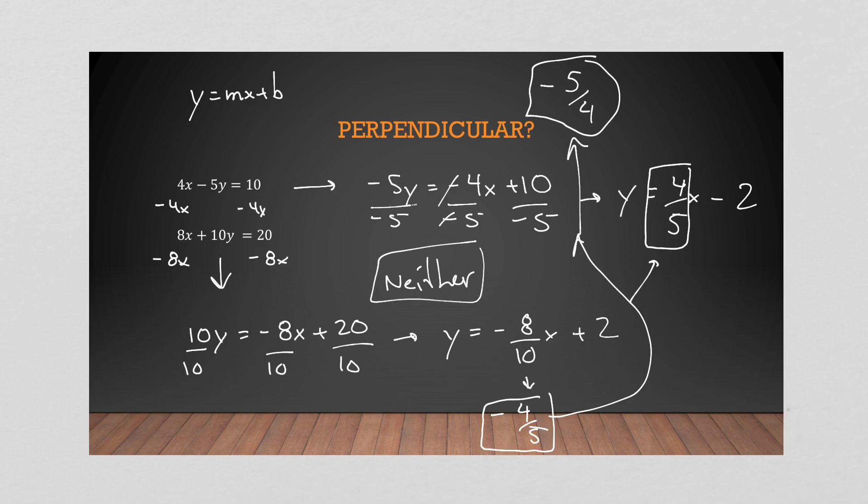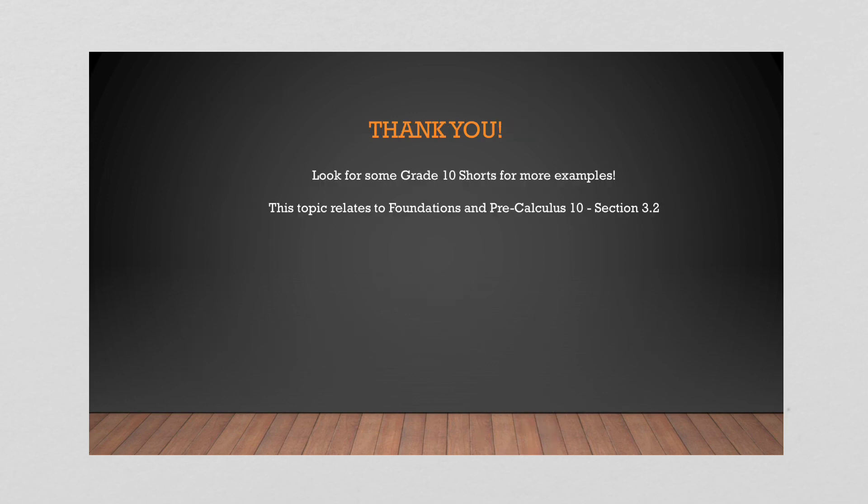If lines are parallel, great. If they're perpendicular, great. But if they don't satisfy either condition, we simply say they're 'neither' — just two lines that happen to cross, but not at a 90-degree angle, so they're not special. That covers section 3.2 of Pre-Cal 10. Great work — keep it up!